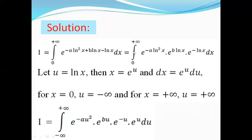Let's now change the bounds of integration. If x equals 0 then u equals ln(0) which is minus infinity, and if x equals plus infinity then u equals ln(+∞) which is plus infinity. So I becomes the integral from minus infinity to plus infinity of e to the power minus a·u², multiplied by e to the power b·u, multiplied by e to the power minus u, all times e^u du.